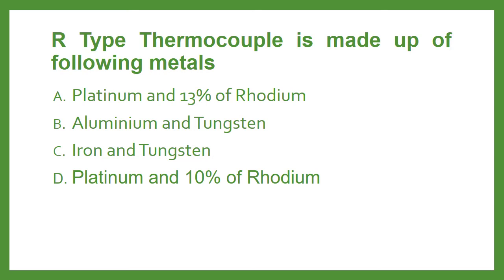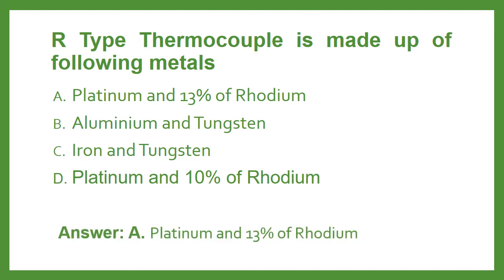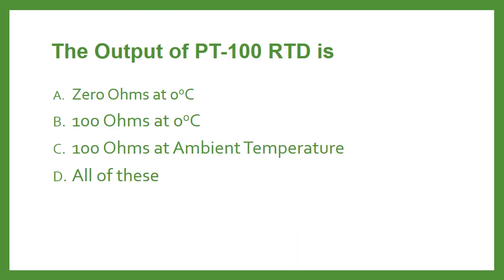R-type thermocouple is made up of the following metals: Option A Platinum and 13% Rhodium, Option B Aluminium and Tungsten, Option C Iron and Tungsten, or Option D Platinum and 10% Rhodium. The answer is Option A: Platinum and 13% Rhodium.